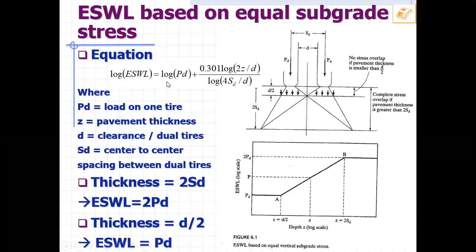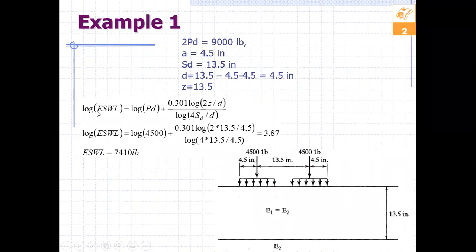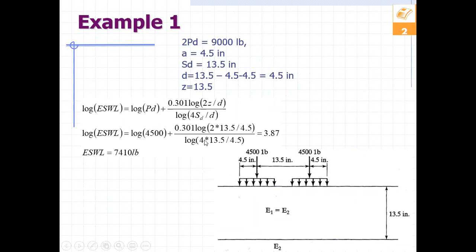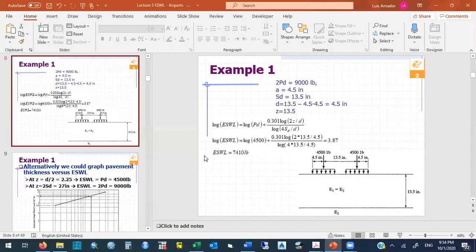Using the Boyd and Foster equation, we plug in our values. P_D is 4,500. We have two times Z — Z is the depth, which is 13.5 — divided by 4.5. On the denominator we have the logarithm of four times S_D (13.5) divided by D (4.5).